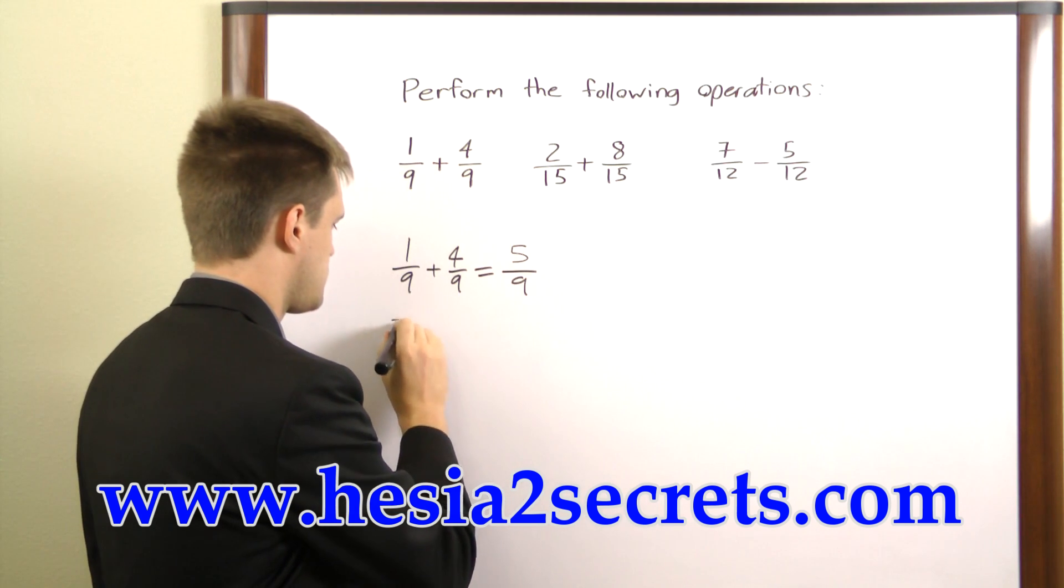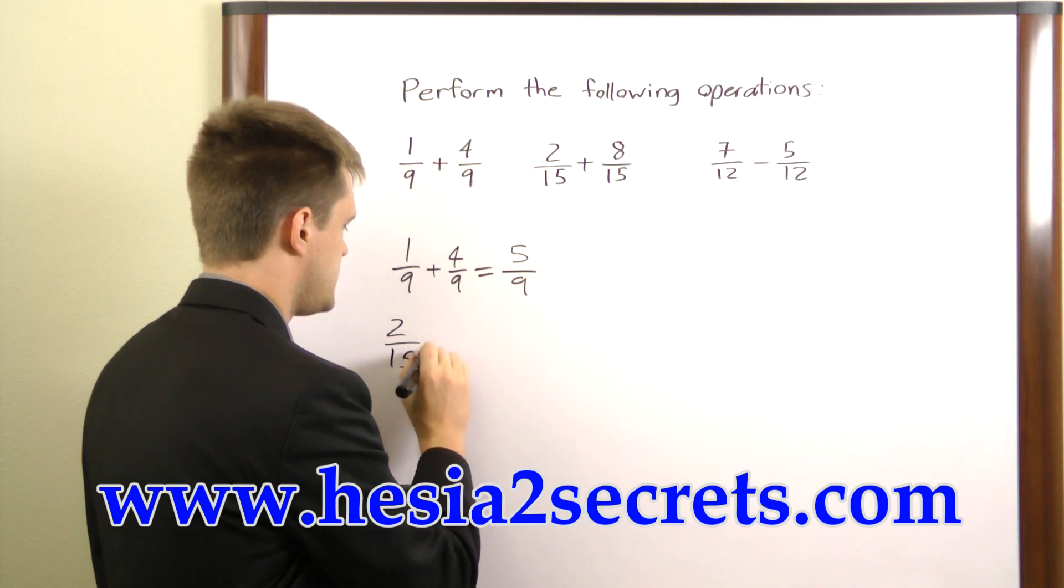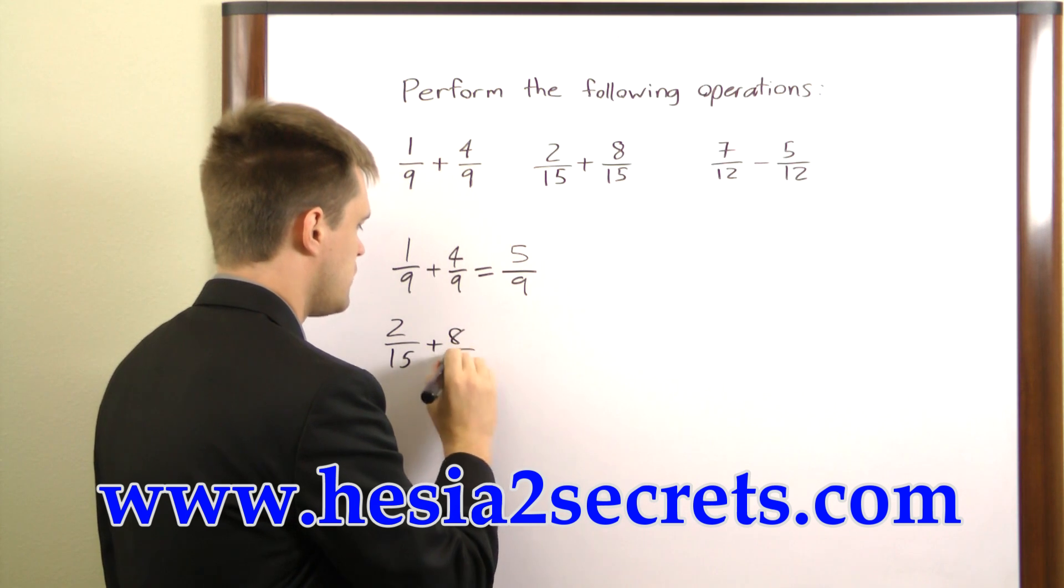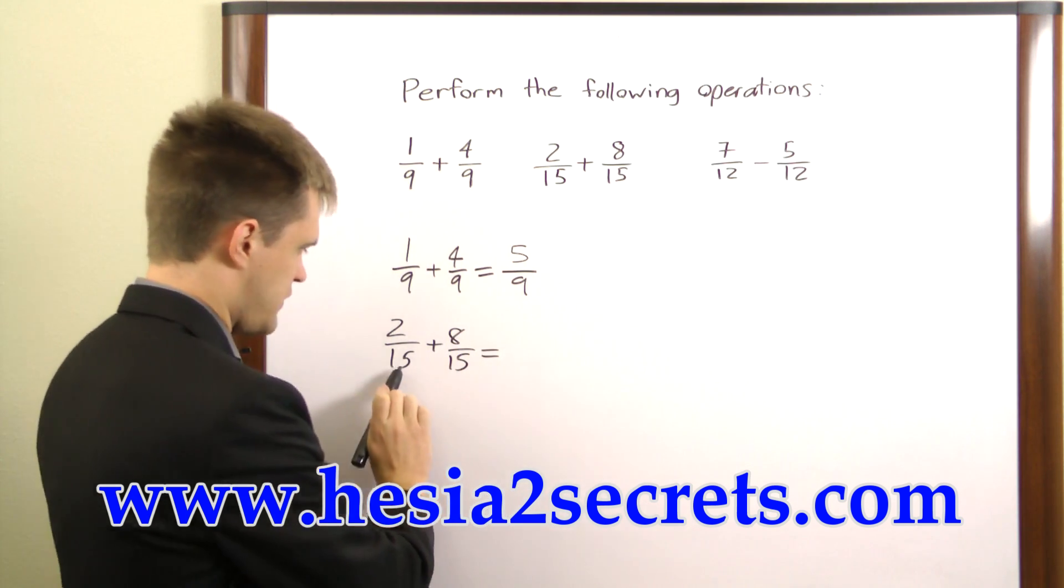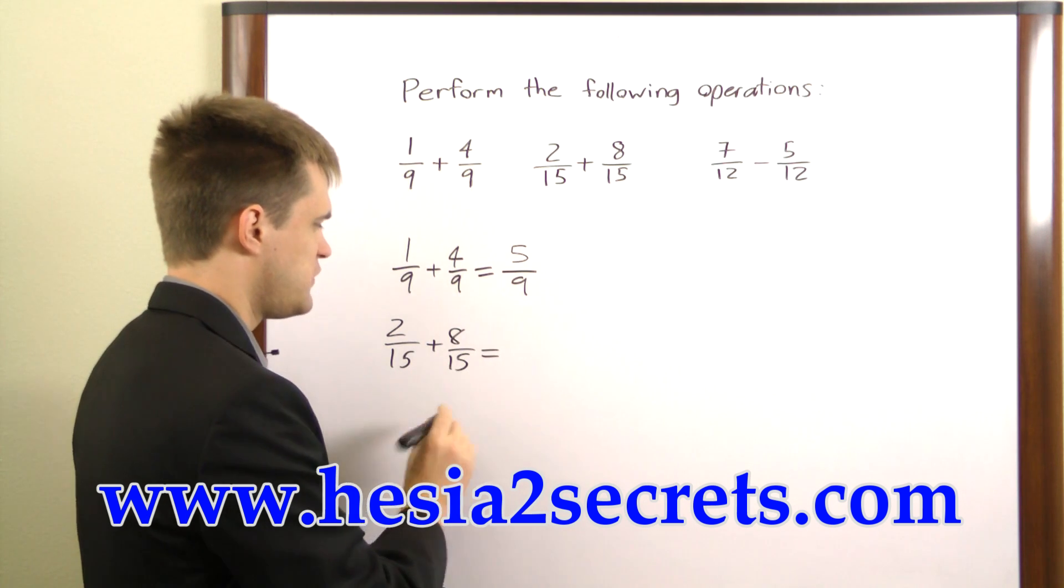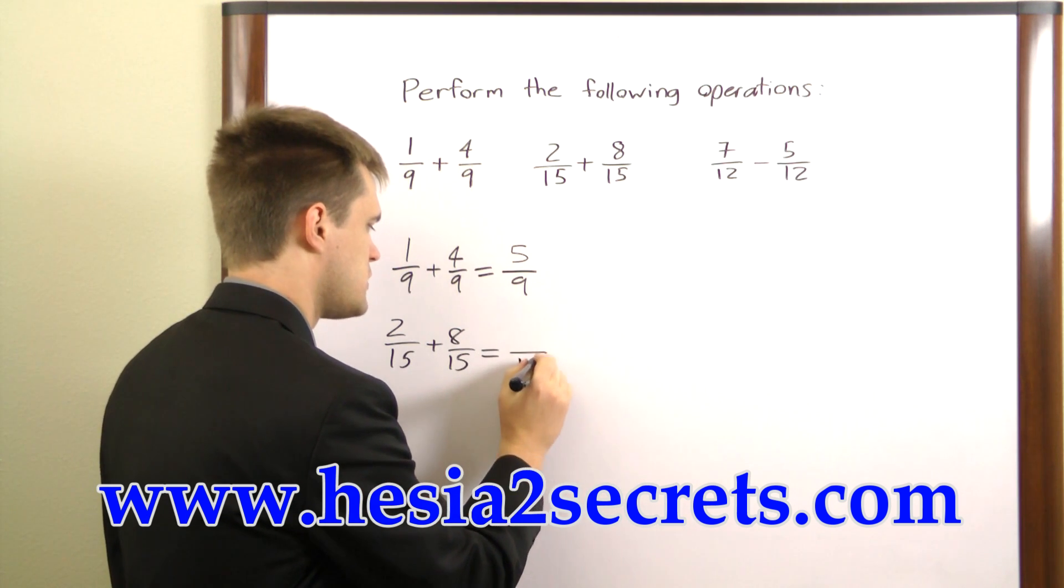Let's look at the next one. 2 over 15 plus 8 over 15. Now once again we have the same number in the denominator, 15, so it's going to carry through to the solution as well.